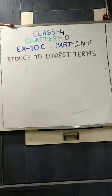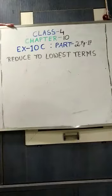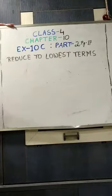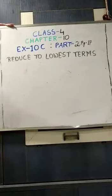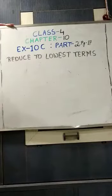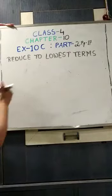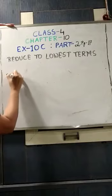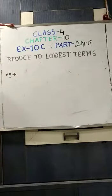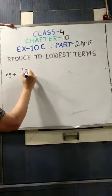Namaste students, we will continue Chapter 10, Exercise 10C Part 2, page number 87 — reduce to lowest terms. In our previous class we learned one process: how to reduce a fractional number into its lowest term. Today we will learn another process. The first process was finding out the factors and then striking out or dividing the common factors. Today we will learn another process — for example, 15 by 20.